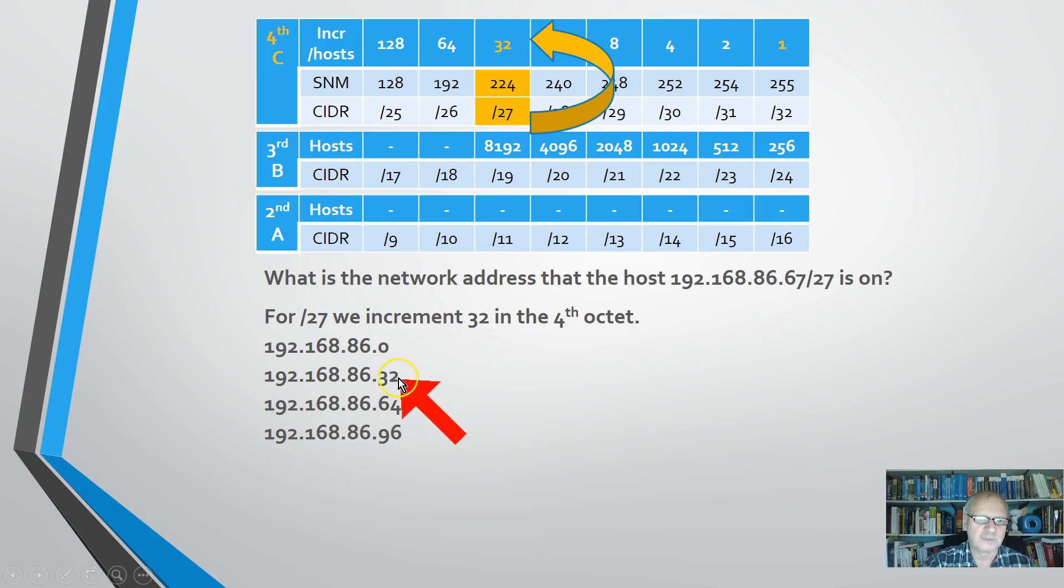Zero. We increment 32 in the fourth octet. Another 32 in the fourth octet, we're at 64. Another 32 in the fourth octet, we're at 96. Ah, that's too high. So we are in 67, so we're back here on the 192.168.86.64 network. So this is the subnet that we're on.